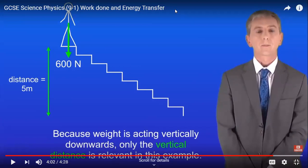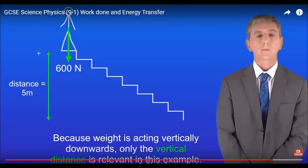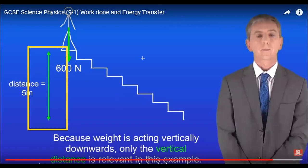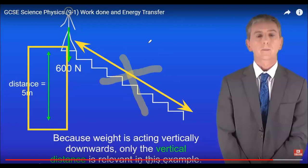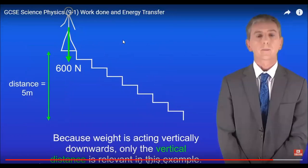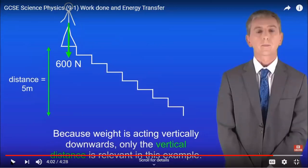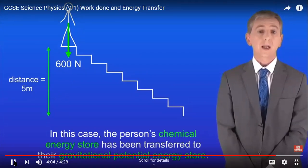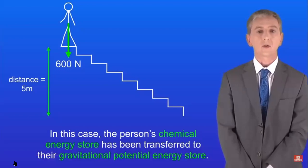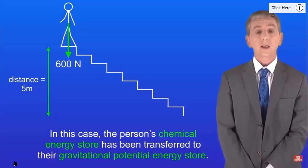The vertical distance is what we use — we don't use the total distance along the slope that the person has travelled; that's the full displacement path. In this case, the person's chemical energy store has been transferred to the gravitational potential energy store. Remember you'll find plenty of questions on work done in the revision workbook.